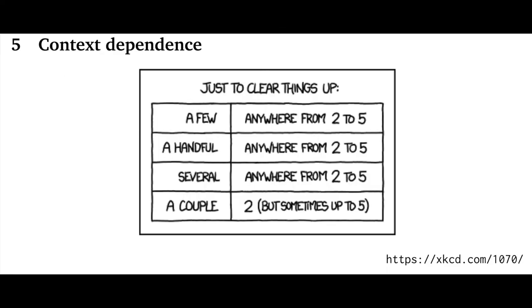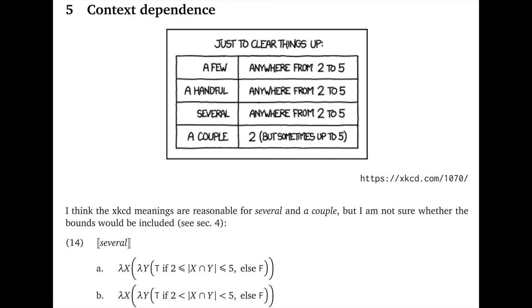All right. So let's move to section five and the related topic of context dependence. I've opened this section with this charming XKCD cartoon. It lists out some determiners in our terms: a few, a handful, several, and a couple. And it says that all of them have a meaning anywhere from two to five with a small hedge for a couple where you might feel like that needs to be exactly two, at least in some context. First, I should say I'm not sure what XKCD is saying here because of the previous issue with lexical uncertainty. Did he mean the inclusive reading of anywhere from two to five or the exclusive one?